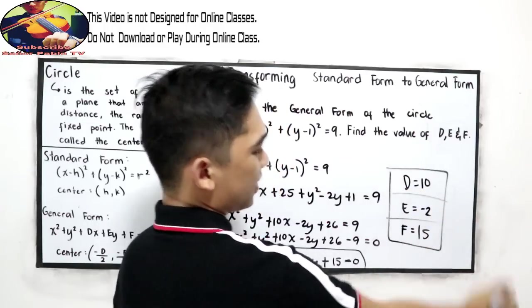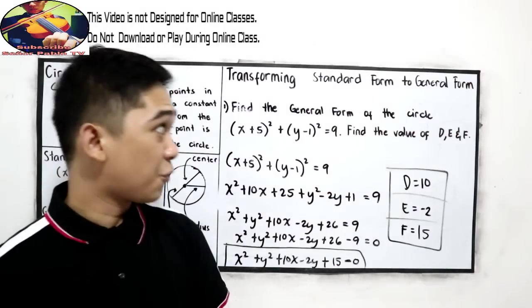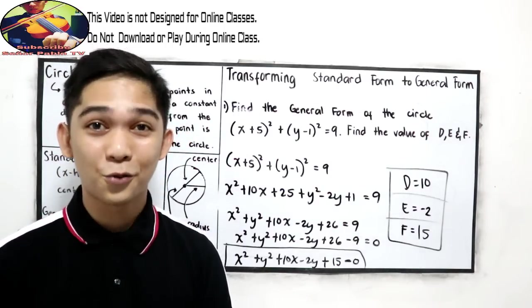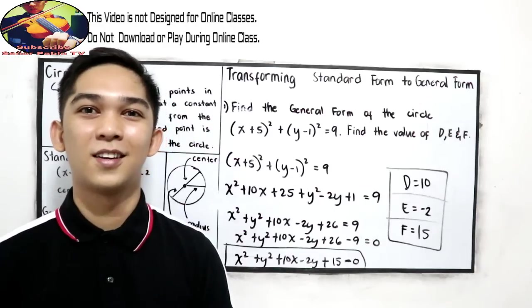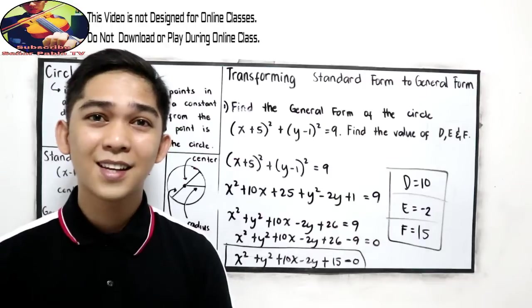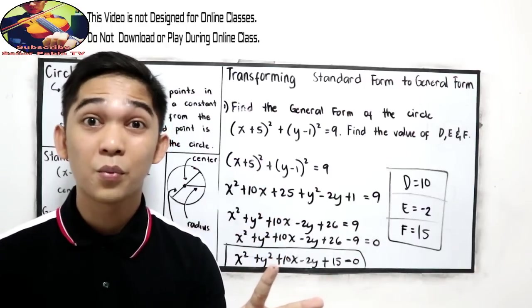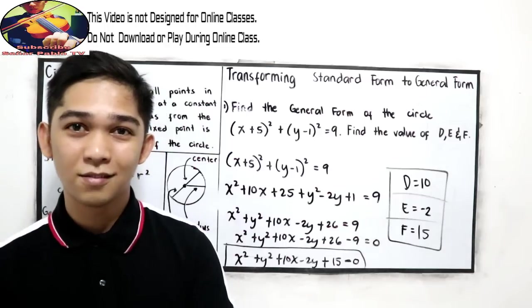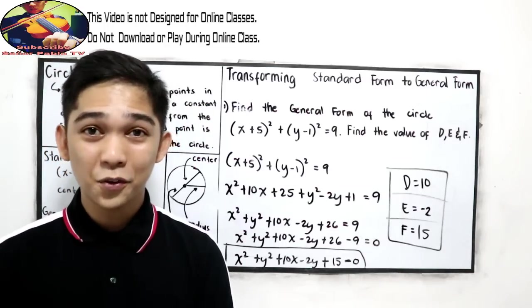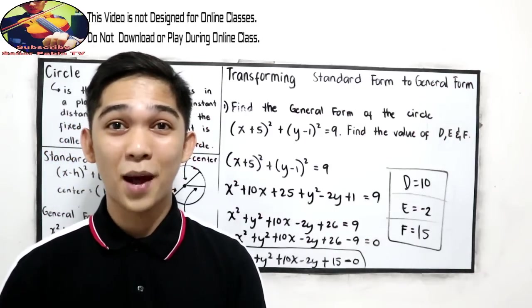That is transforming standard form to general form. In our next video, we'll discuss: what if the given is the center and the radius? We're going to find the general form or the standard form. Stay tuned for our next video. Thank you for watching Senior Pablo TV.